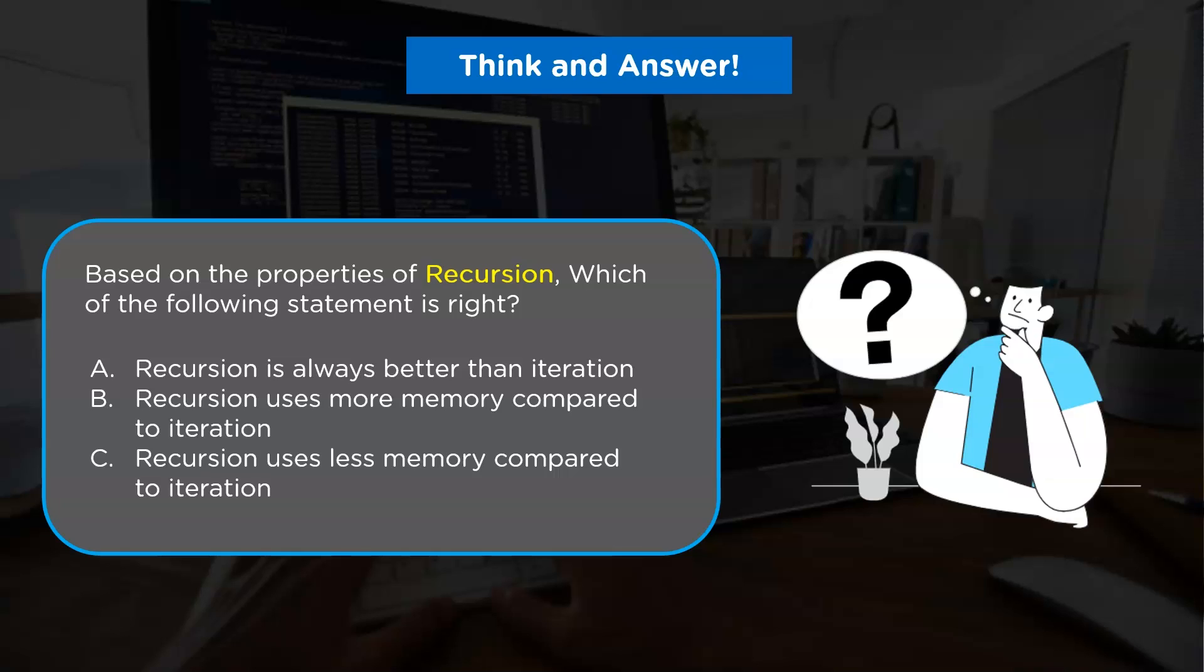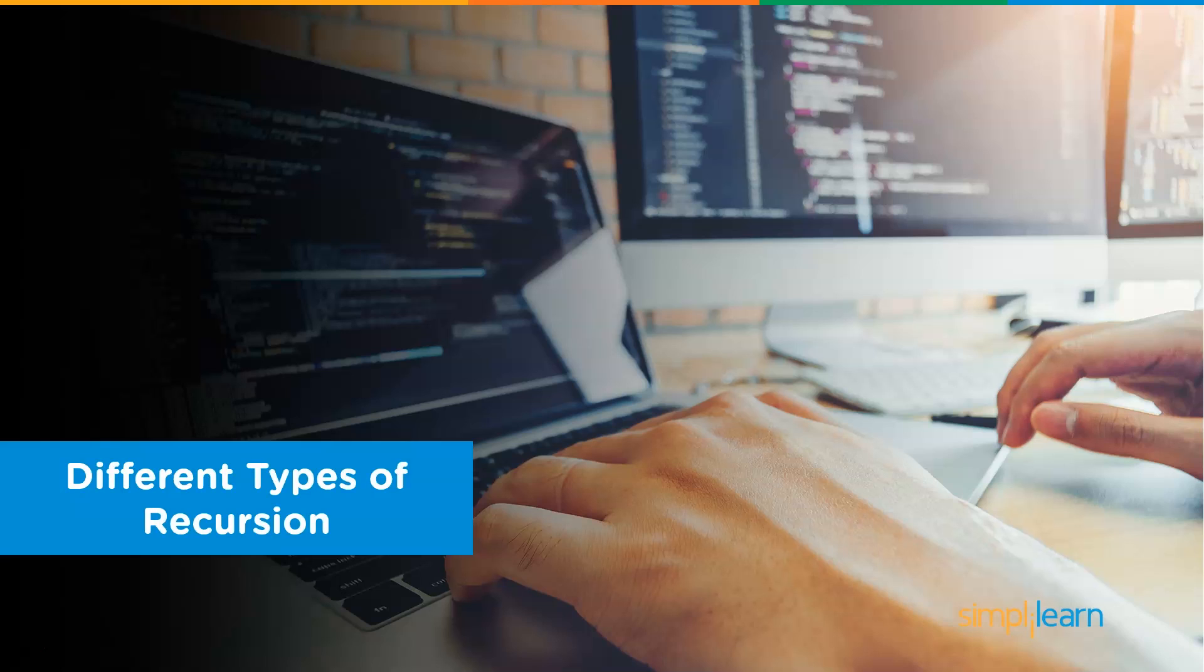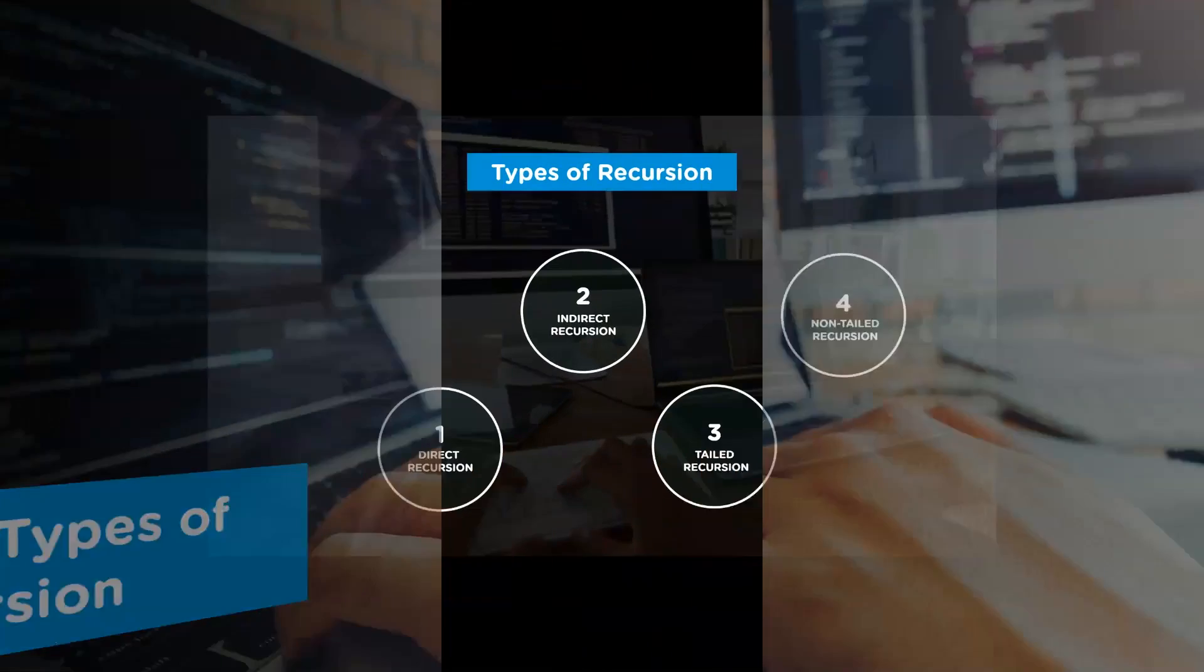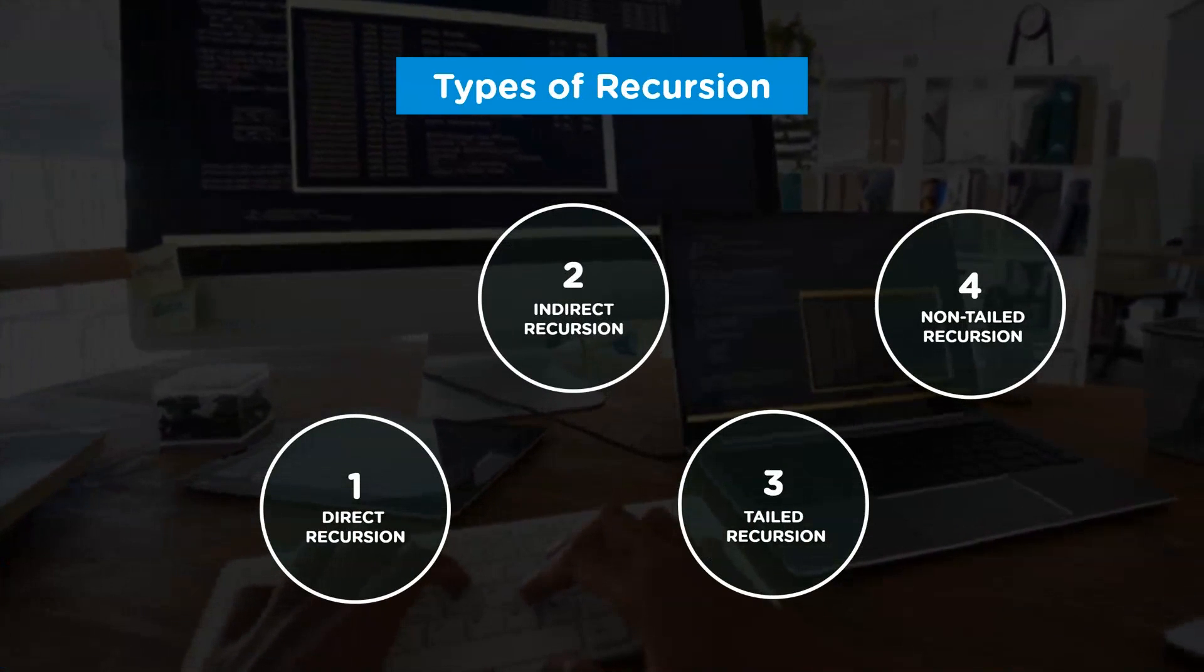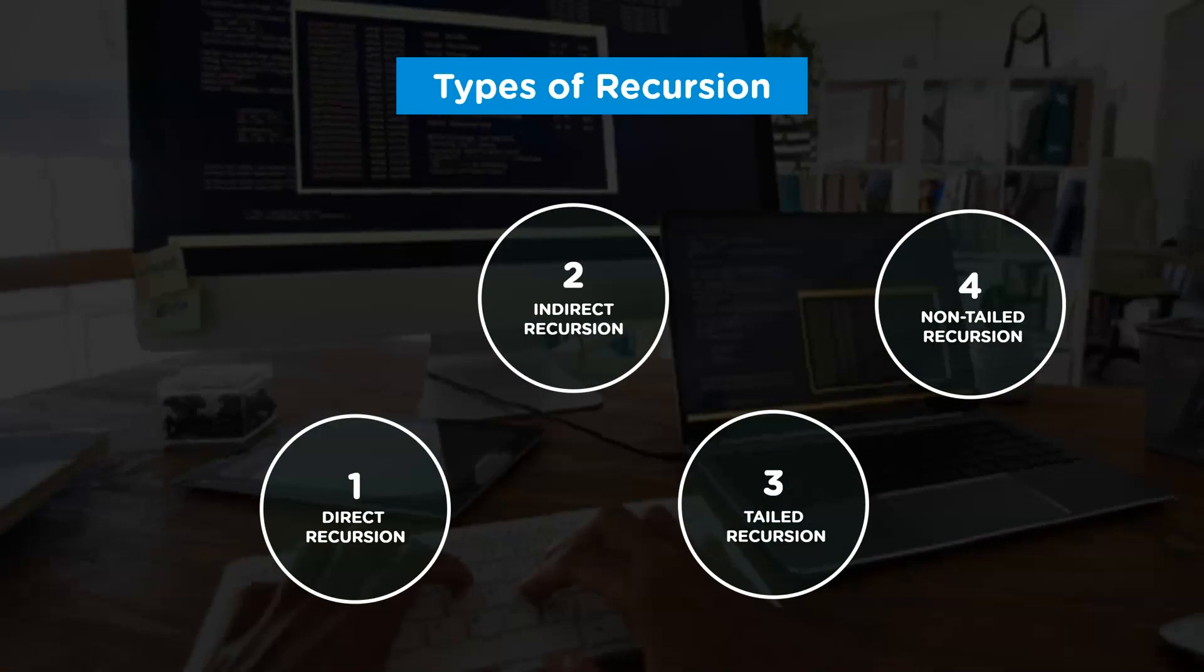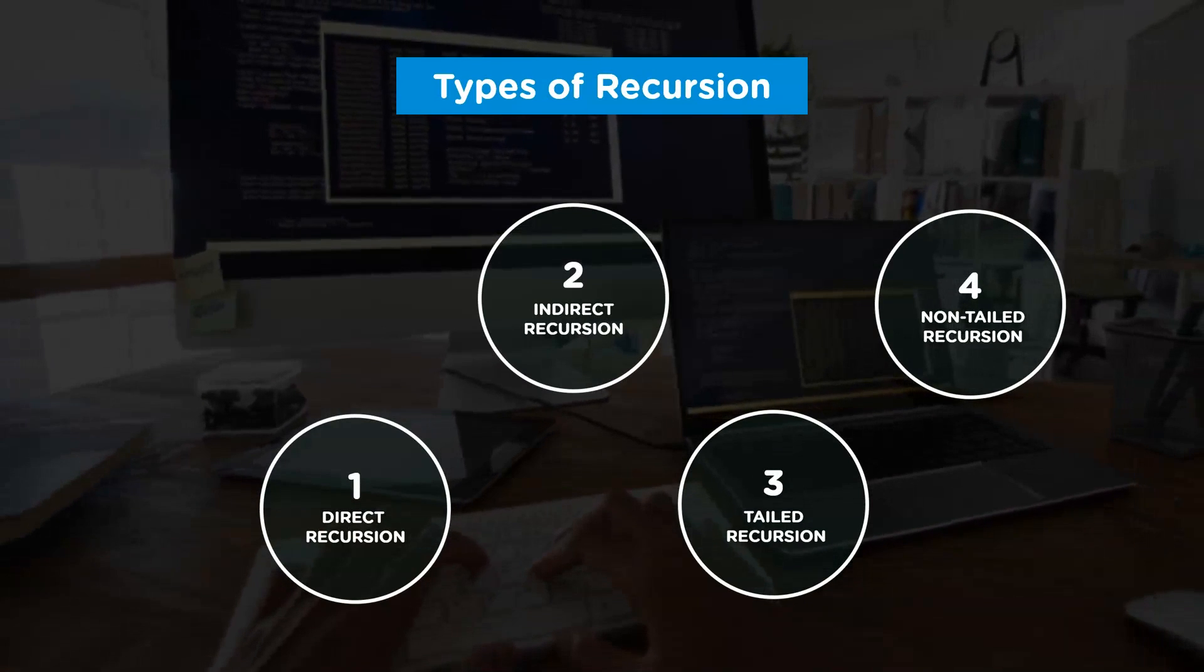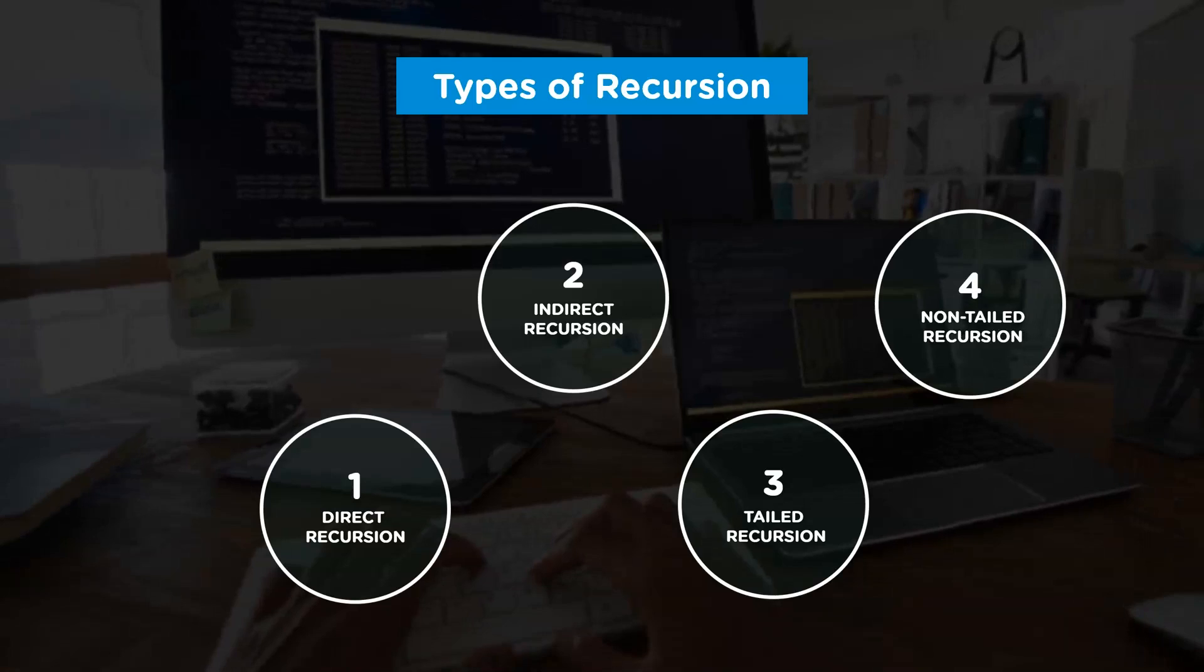Now moving ahead, we'll discuss different types of recursion in programming. There are basically four types of recursion. The first one is direct recursion. The second one is indirect recursion. The third one is tail recursion and the fourth one is non-tail recursion.